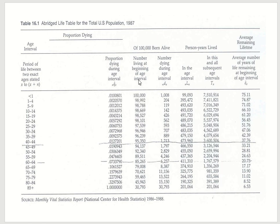The next thing you're going to do is start with a set of numbers. This table started with a cohort of 100,000 born alive. You could start with 100,000 or a million — it doesn't matter. The starting number does not matter.